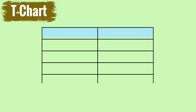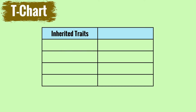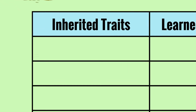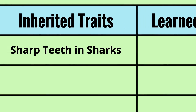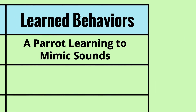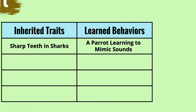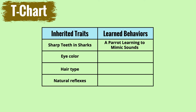Interactive element 2: Draw a T-chart in your workbook with one side labeled inherited traits and the other labeled learned behaviors. List examples of each from the animal world. For instance, under inherited traits you might write shark teeth in sharks, and under learned behaviors, a parrot learning to mimic sounds. This activity will help you understand the difference between what is passed down genetically and what is learned.